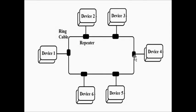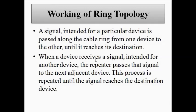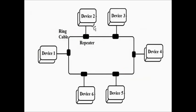The repeater performs the task of intercepting the data between two devices. If a particular data or information is intended for the device to which the repeater is joined, it sends the data to that device. Otherwise, it passes it on to the next adjacent device. A signal intended for a particular device is passed along the ring cable from one device to the other until it reaches the destination. This is how the ring topology works.